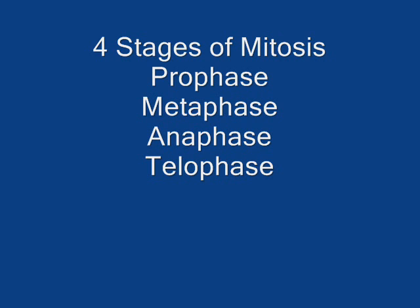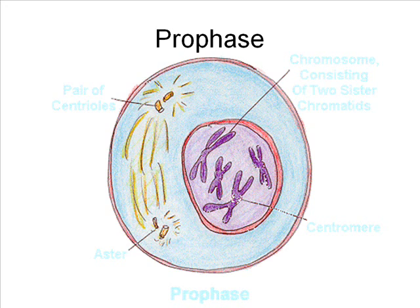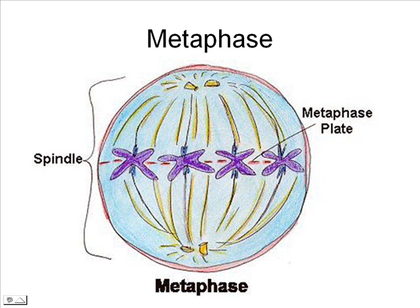During prophase, the first stage of mitosis, the DNA condenses into chromosome form and the chromosomes first become visible. The chromosomes attach to the spindle apparatus or spindle fibers, and the nuclear membrane of the cell dissolves away. During the second stage, metaphase, the chromosomes attach to the spindle fibers and are pulled to the middle of the cell, where they line up.